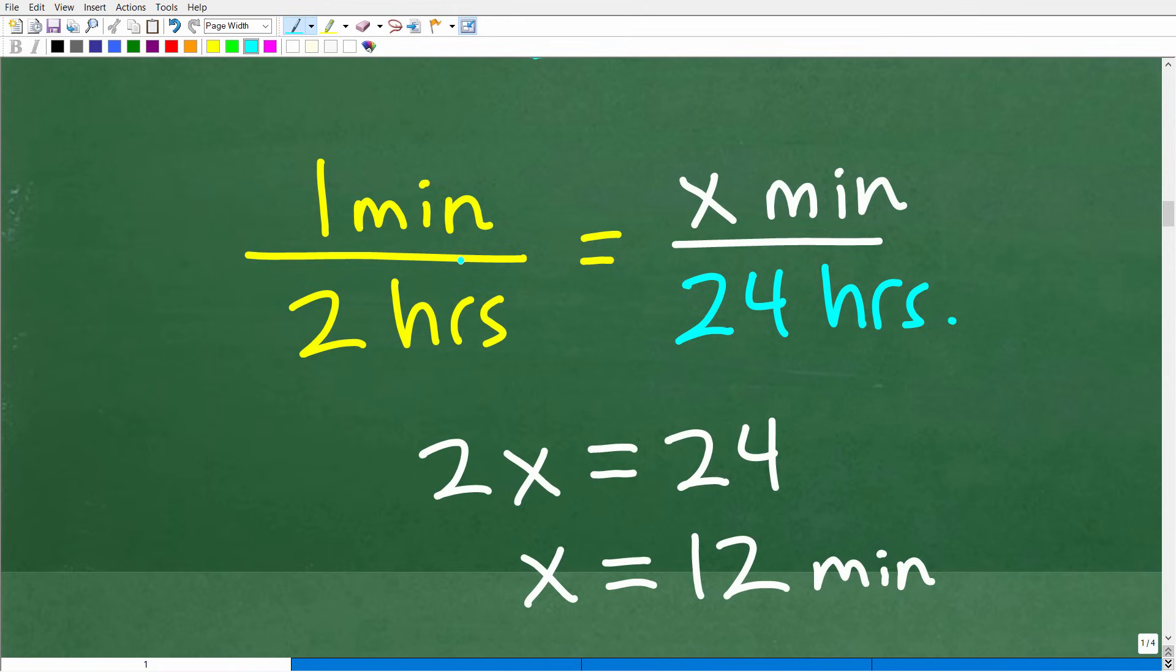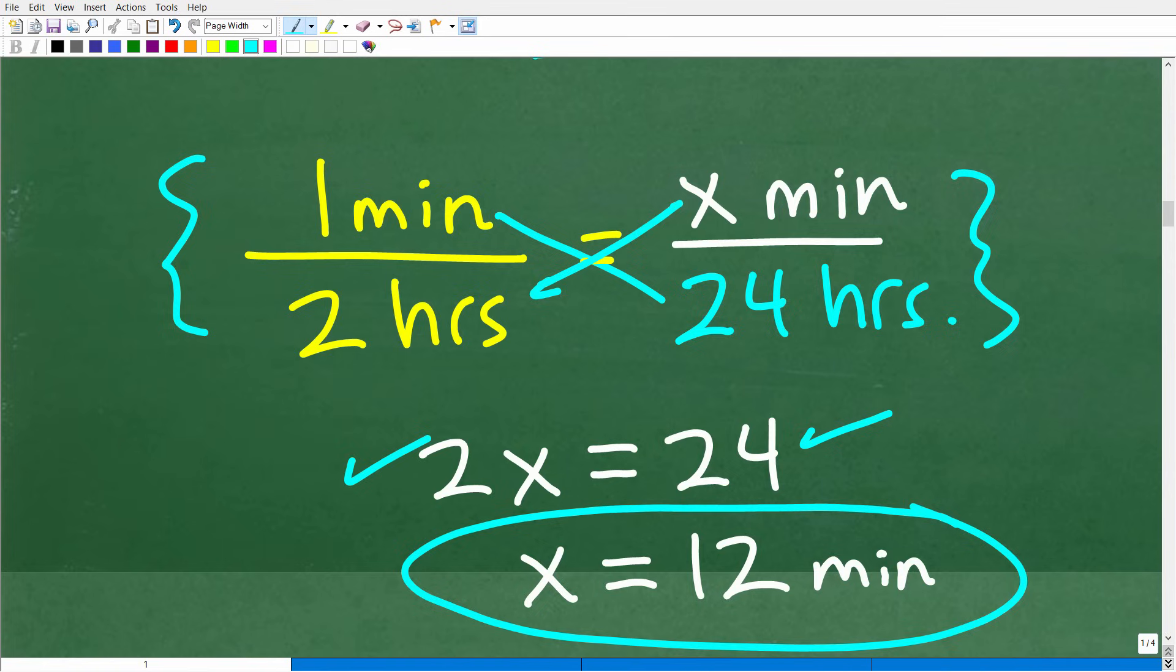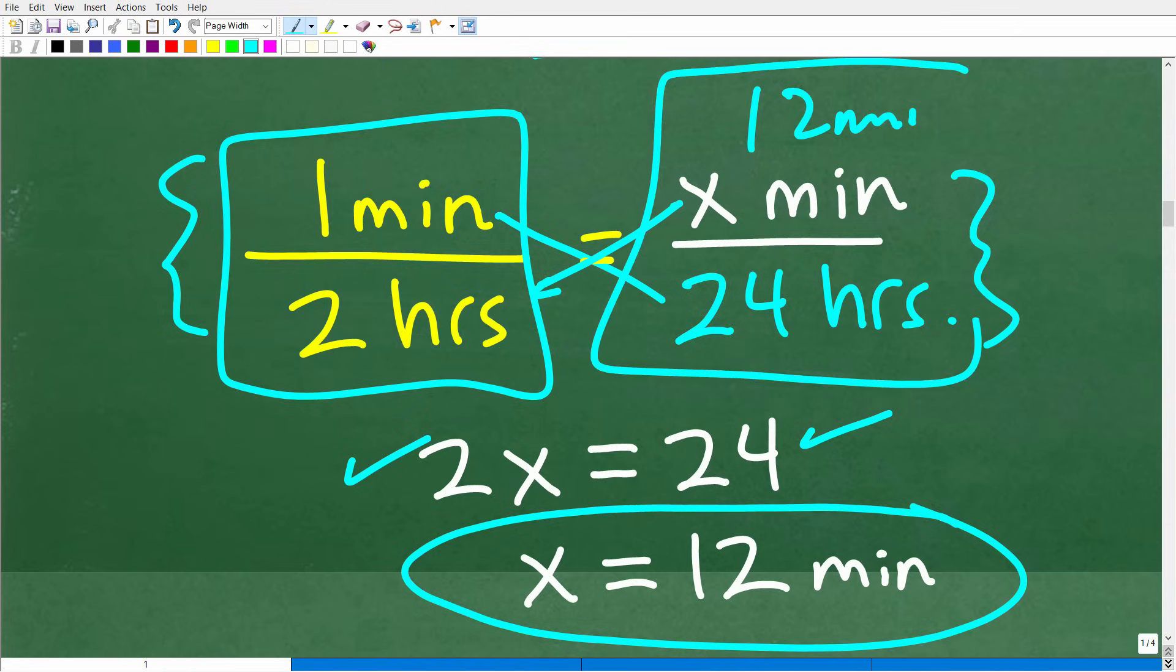How many minutes are we going to lose in 24 hours, okay? So we can set this up, and then we can use the cross product to figure this out. So in other words, 1 times 24 is 24. x times 2 is 2x, and then we can solve for x. So x is equal to 12 minutes, okay? In other words, if a clock loses one minute for every two hours, it'll lose 12 minutes for every 24 hours. So we need that first.